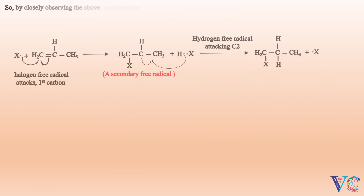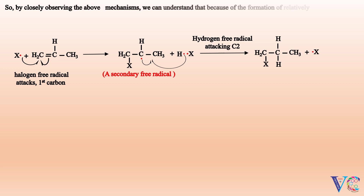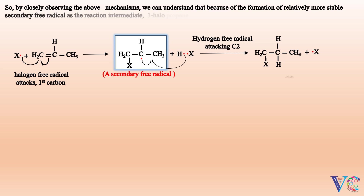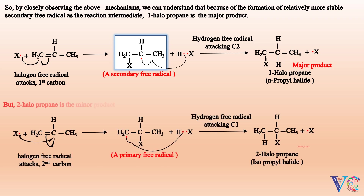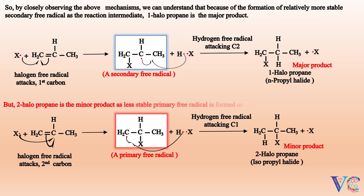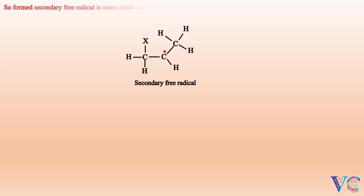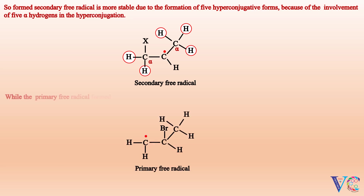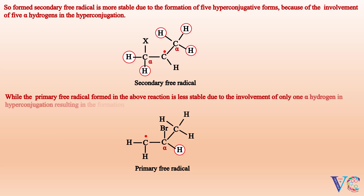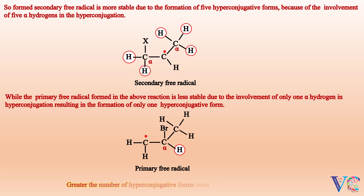By closely observing the above mechanisms, we can understand that because of the formation of a relatively more stable secondary free radical as the reaction intermediate, 1-halopropane is the major product. But 2-halopropane is the minor product, as the less stable primary free radical is formed as the reaction intermediate. The secondary free radical is more stable due to the formation of 5 hyperconjugative forms, because of the involvement of 5 alpha hydrogens in hyperconjugation. While the primary free radical is less stable due to only 1 alpha hydrogen in hyperconjugation, resulting in only 1 hyperconjugative form. Greater the number of hyperconjugative forms, more will be the stability.